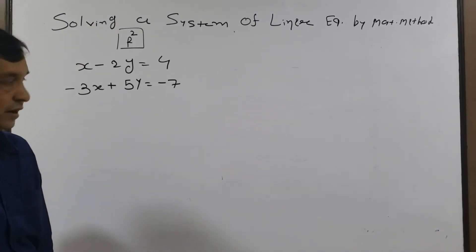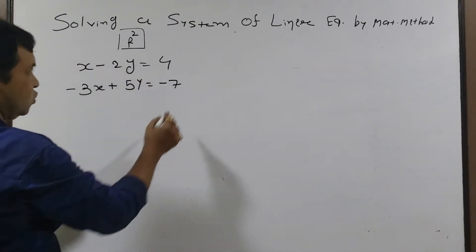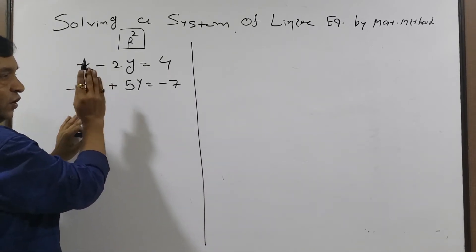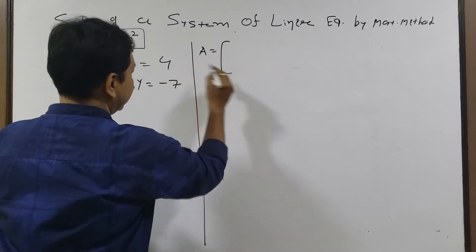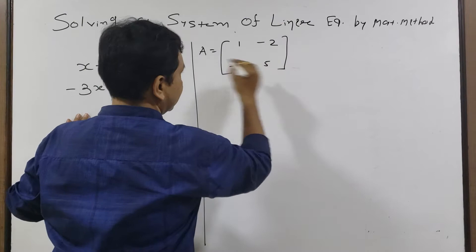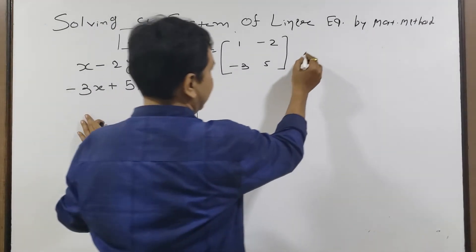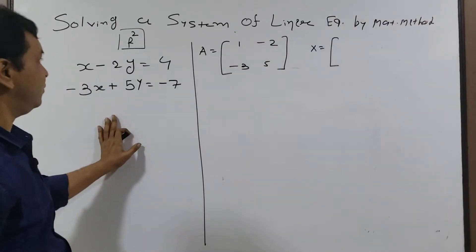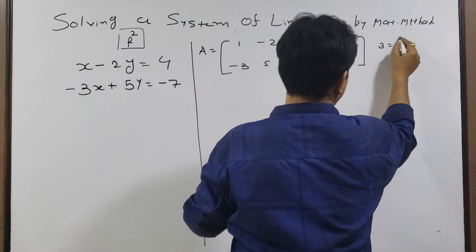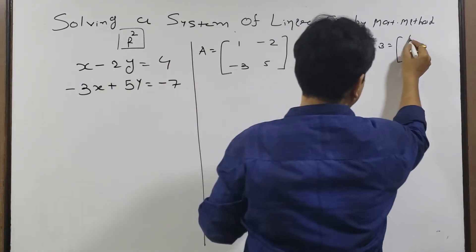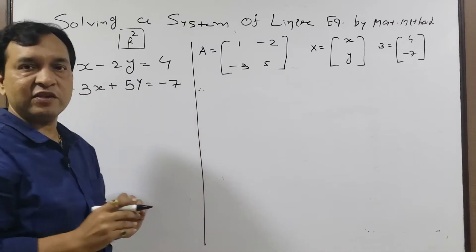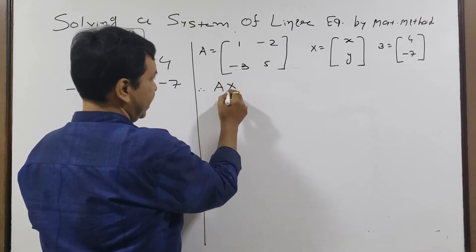Now we solve the equation. The first stage is to write the matrix for the coefficients of x and y. So we have 1, -2, -3, and 5 as the first matrix A. The second matrix is the variable matrix for x and y. The third matrix B equals the constant matrix. Next stage: write AX = B.